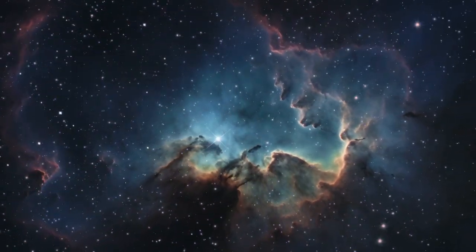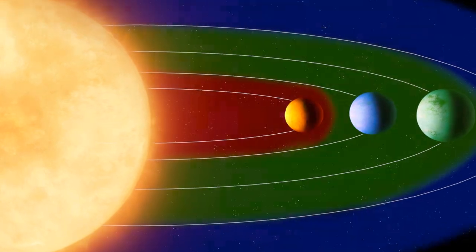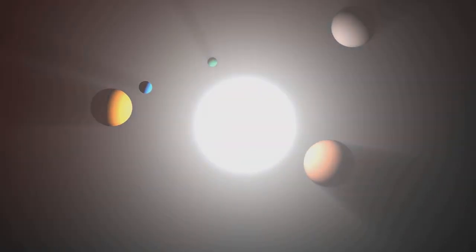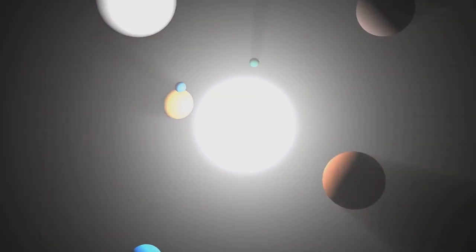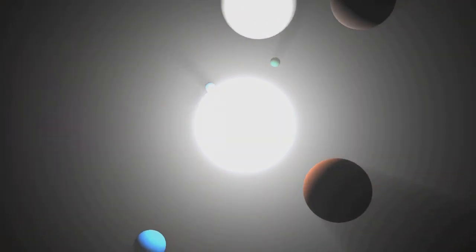The third aspect looks at the number of planets per star that could potentially support life. This is where we consider elements like the right distance from the star, the right atmosphere, and other conditions suitable for life as we know it.